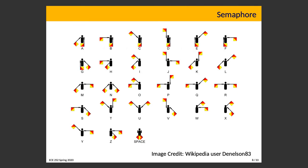A graphic shows the semaphore alphabet — you can communicate any message by spelling words based on how the flags are held, noting each letter until the message is complete. That's where the term semaphore comes from, and while it's not exactly the same as the computer semaphore, that's why it's called what it is.